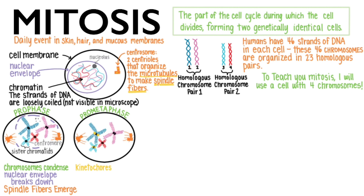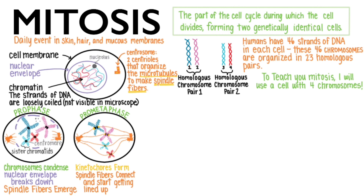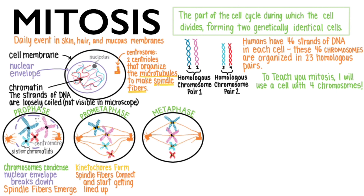The kinetochores — massive protein structures — assemble on the centromere. There are something like a hundred proteins involved in forming each of these. The spindle fibers connect to these kinetochores and start getting the chromosomes lined up. The microtubules lengthen and shorten and shift around as they move the chromosomes toward the middle of the cell. Metaphase is the relatively short time period in the cycle when the spindle has lined up the chromosomes in the center of the cell. Meta can mean middle.